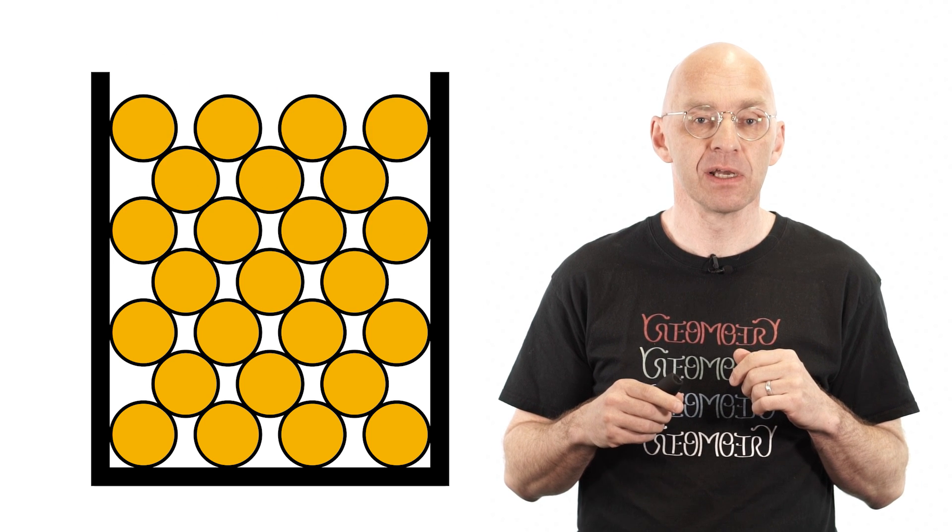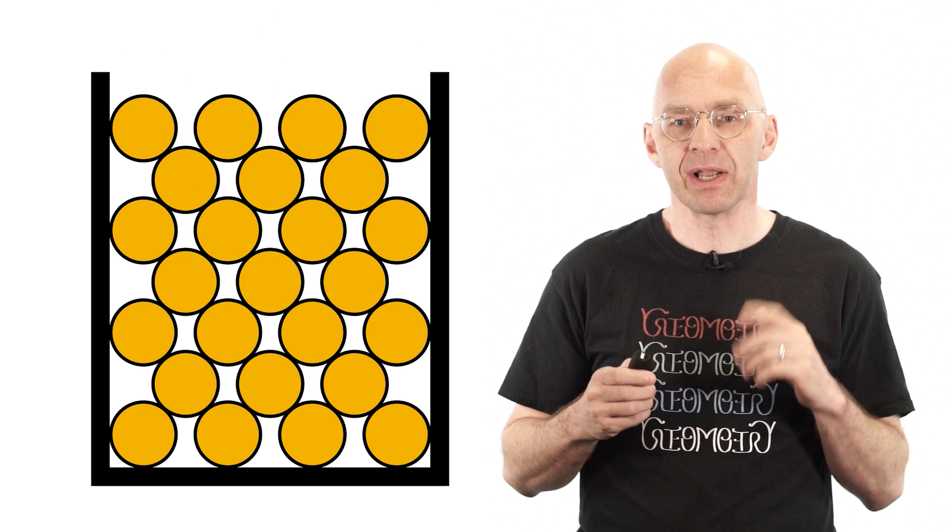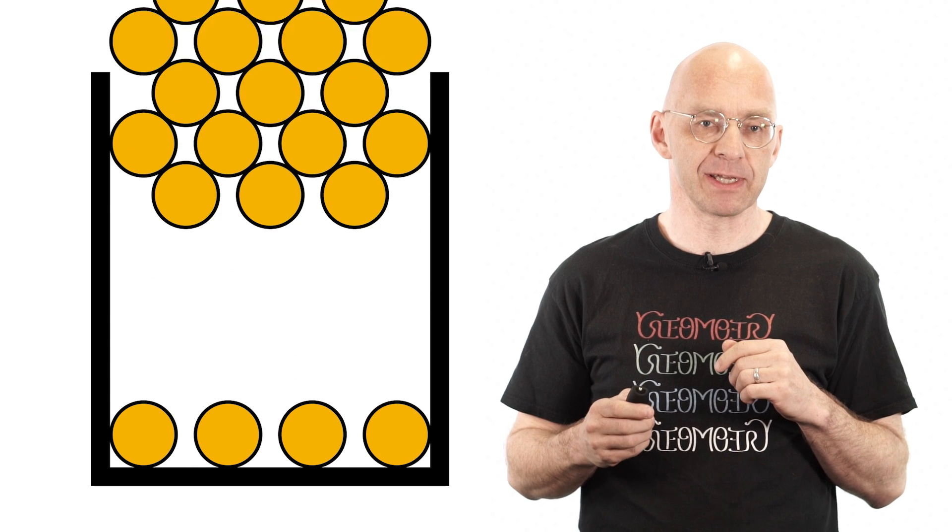Let's fill up the box with circles by stacking them row by row like this. Stack, stack, stack, stack. Okay, let's start again and have a closer look at what's happening here.